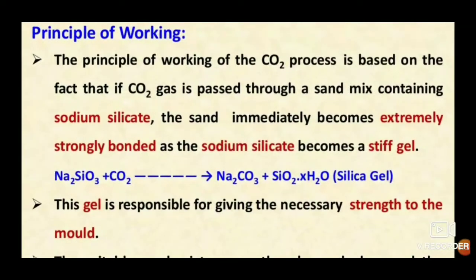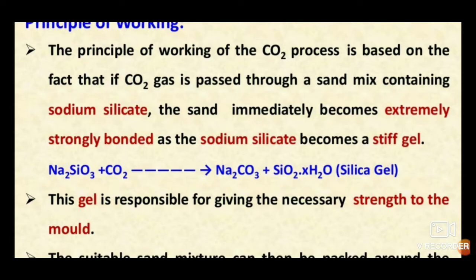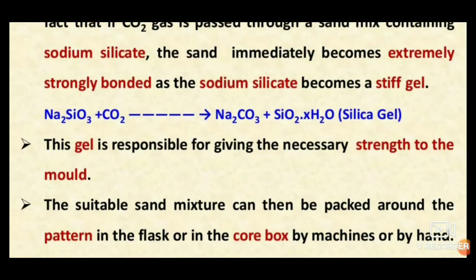The principle behind this process: when carbon dioxide gas is passed through a mixture containing sodium silicate — the silicate mixed with sand — the sand immediately becomes extremely bonded together, looking like a stiff, hardened material. The equation is: Na2SiO3 (sodium silicate) + CO2 reacts to give sodium carbonate + silicon dioxide + water, forming a silica gel. This gel is responsible for giving the necessary strength, as the strongly bonded material becomes a hardened gel.